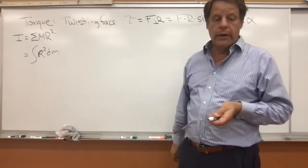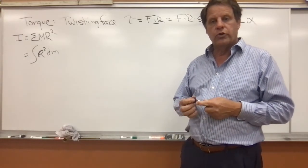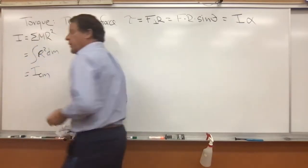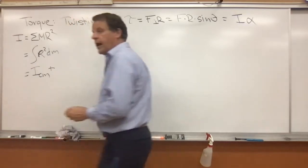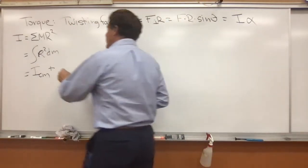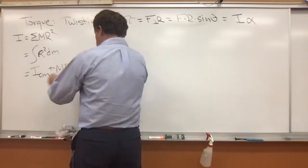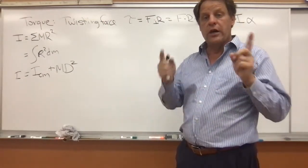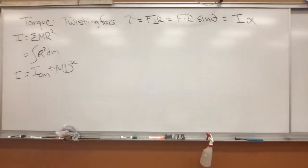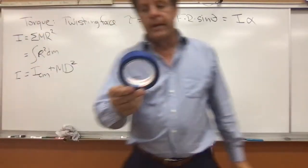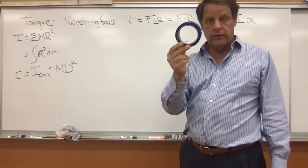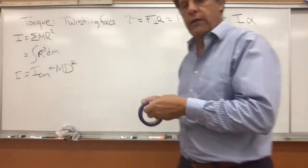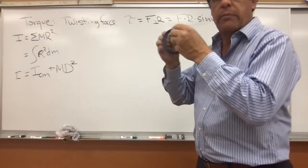There is one more way to calculate the moment of inertia, called the parallel axis theorem. If you know the moment of inertia about the center of mass, but the object is not rotating about the center of mass — it's some offset — then I equals I_cm plus M times D squared. An example would be a ring where the mass is at a constant radius, giving MR squared.